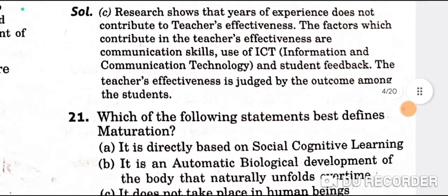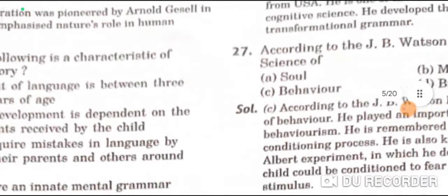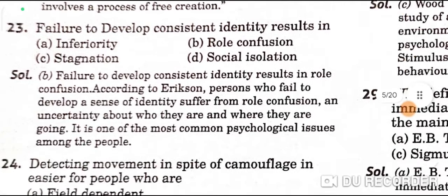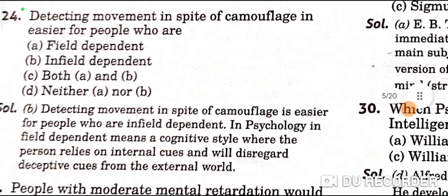Which of the following best defines maturation? It is directly based on social cognitive learning — A is the correct option. Children have an innate mental grammar — D is the correct option. Failure to develop a consistent identity results in role confusion — B is the correct option. Detecting movement in spite of camouflage is easier for people who are field dependent — B is the correct option.